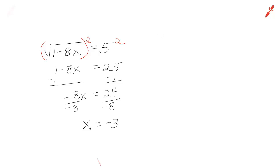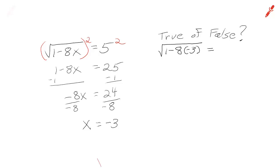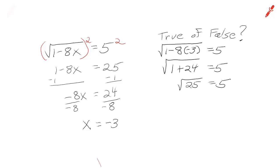The thing is, you can never ever be sure about your answers when you solve a radical equation. You always have to check your answers. So we're going to substitute negative 3 in for x. Because the square root of 25 is indeed 5, so 5 equals 5, and that's true.